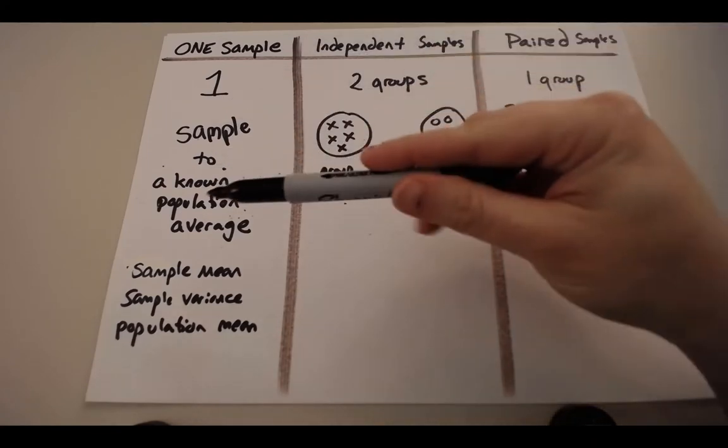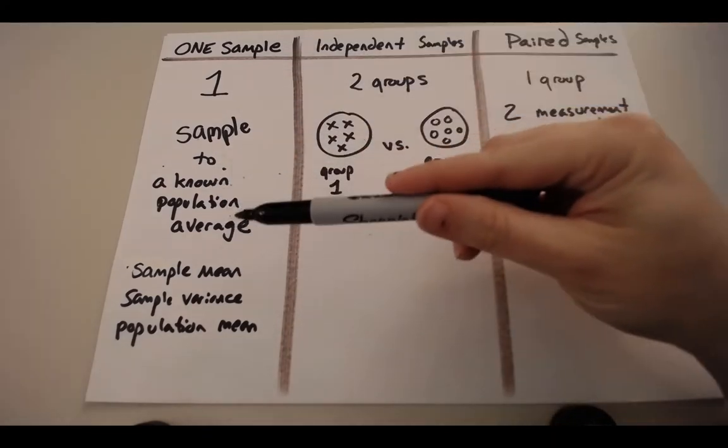For this module, we're going to be focusing on the one-sample t-test. Again, a one-sample t-test is where you take one sample and you're comparing them to something we know about a population. And while that's not the most frequent type of t-test that you might read in, say, published literature, it is still a very important tool.